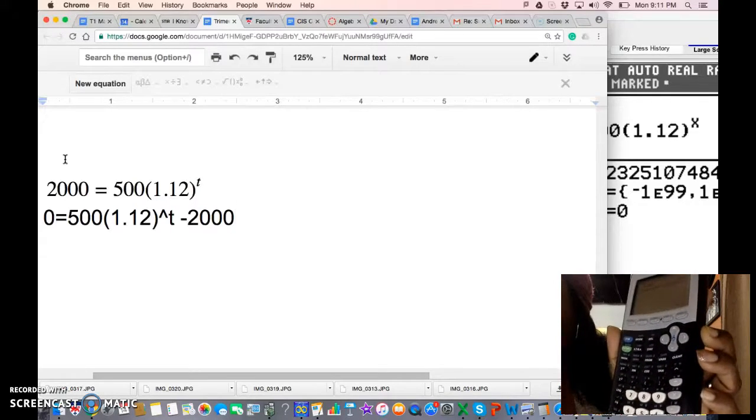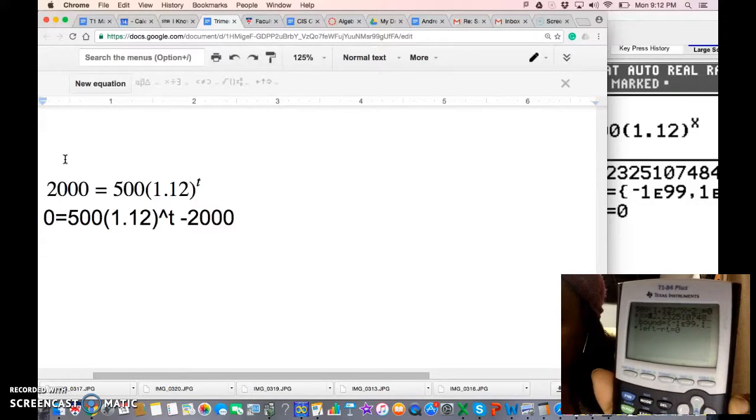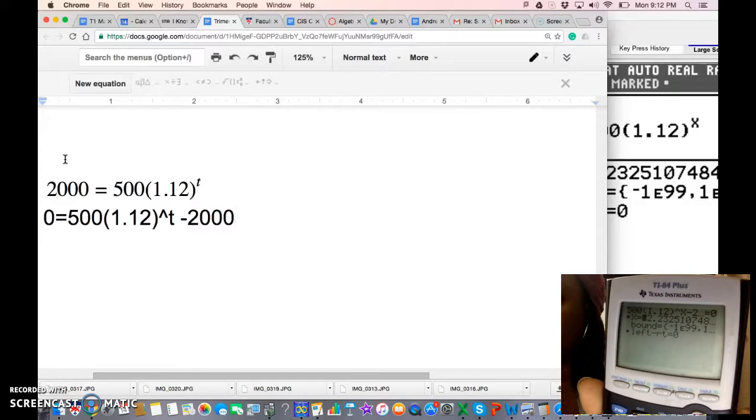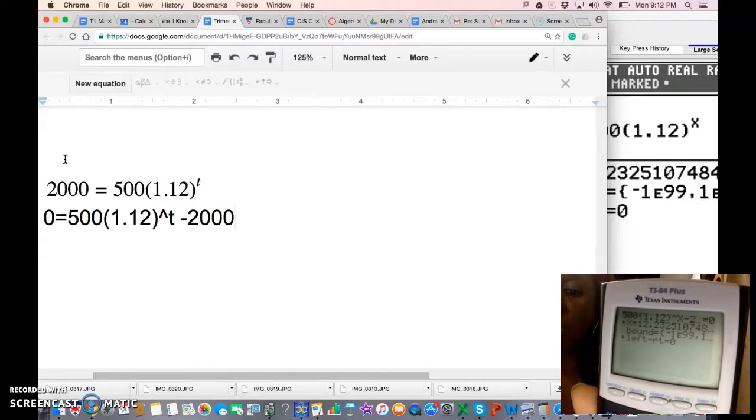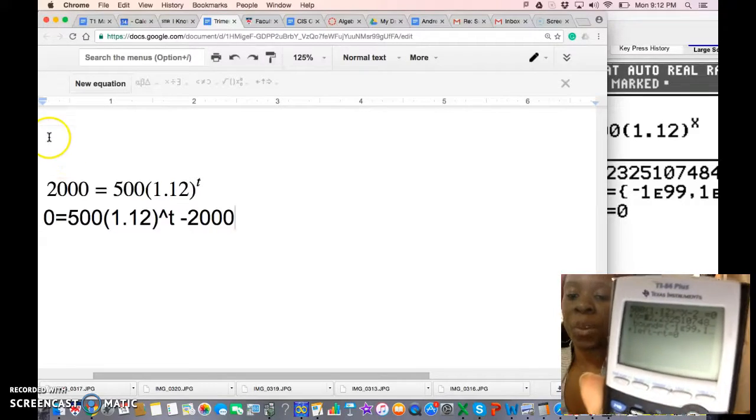But the last step is super important in this calculator as well. I'm going to press Alpha and Enter again to solve it, and as you can see, the answer is the same as it was in the new calculator: 12.2. And that's how you use solver in the older and the newer version of the TI-84. Hope that helps.